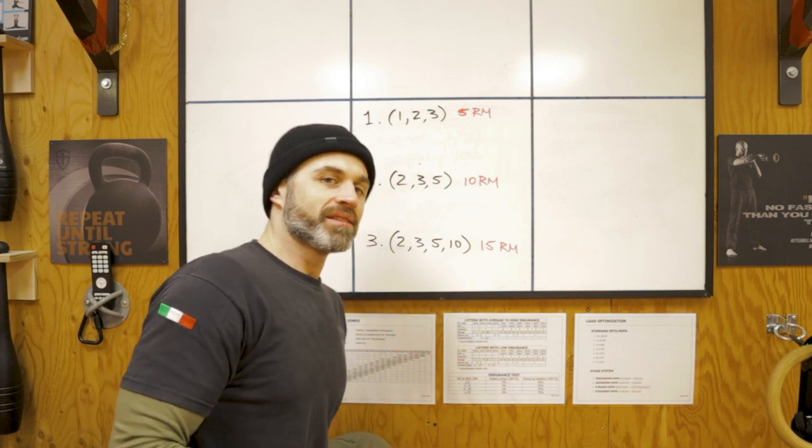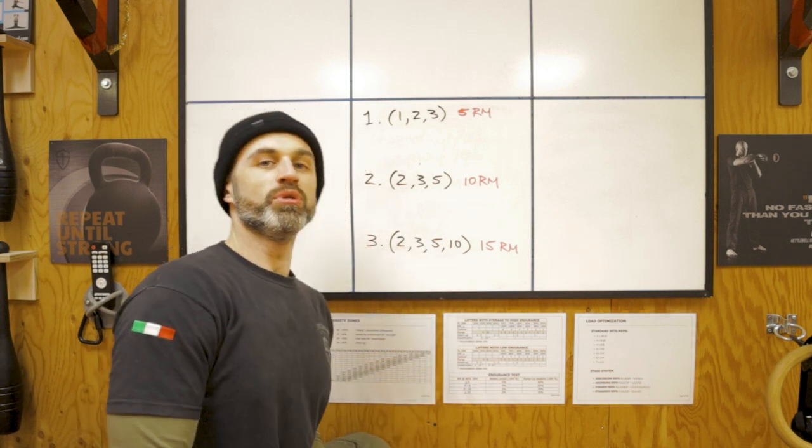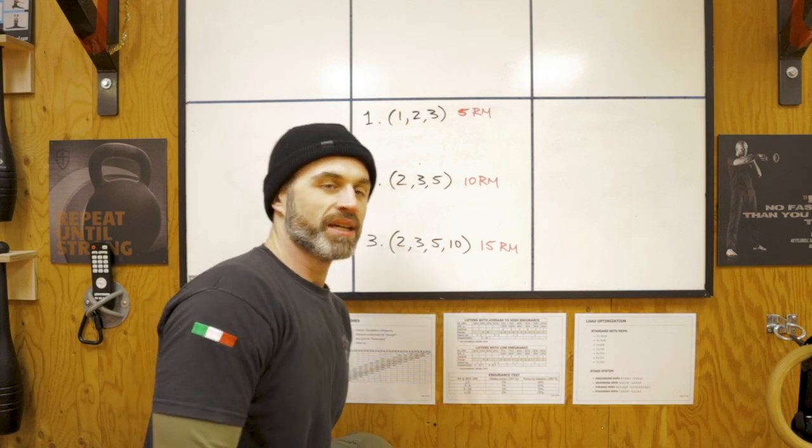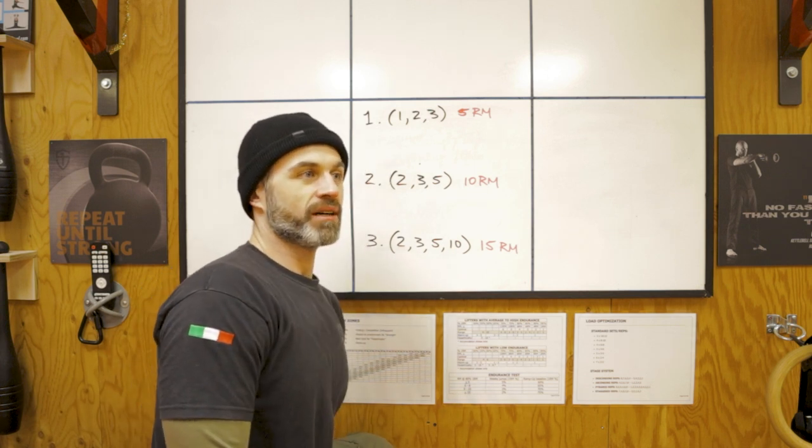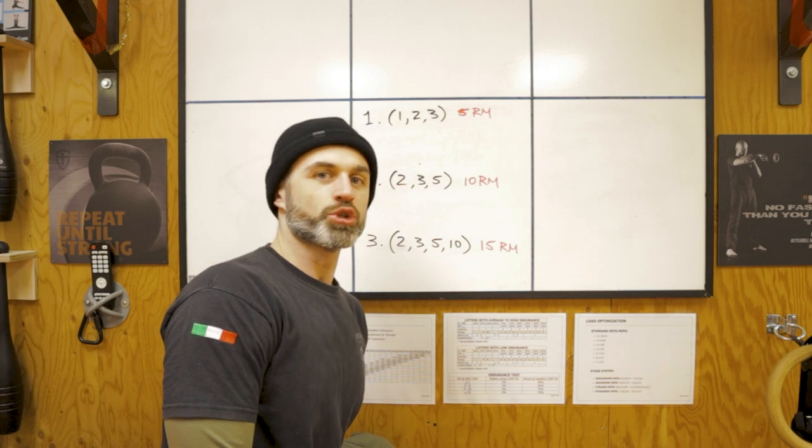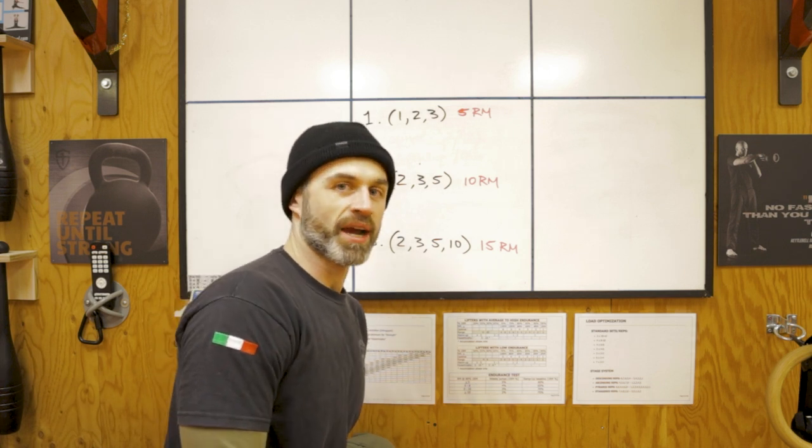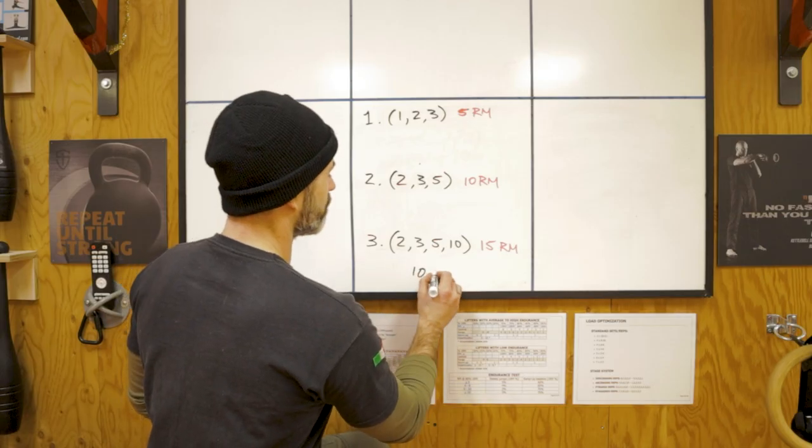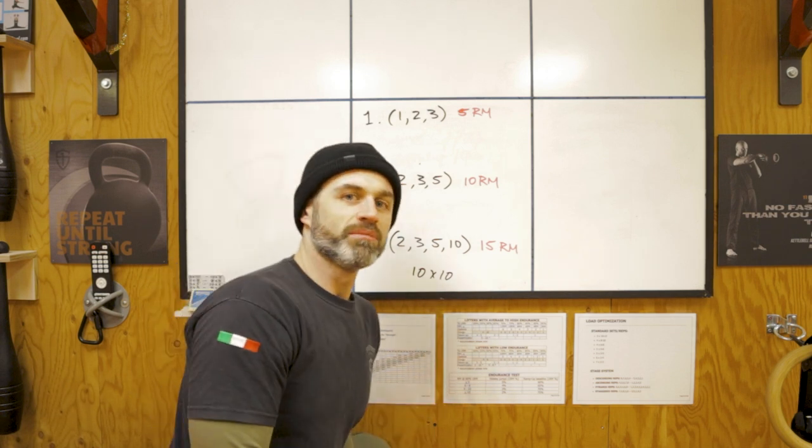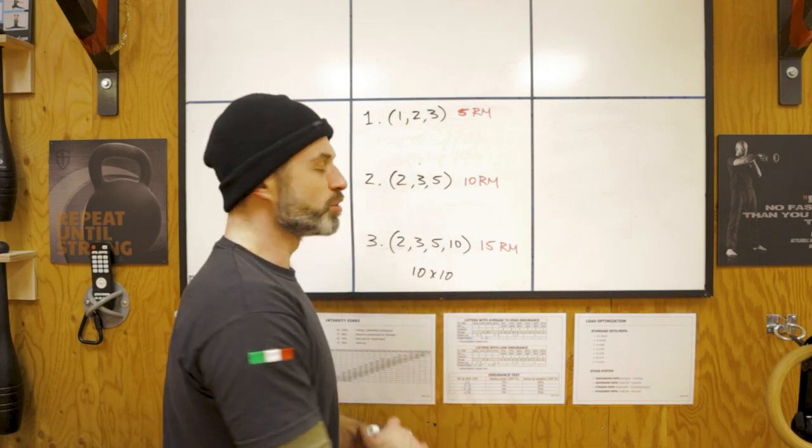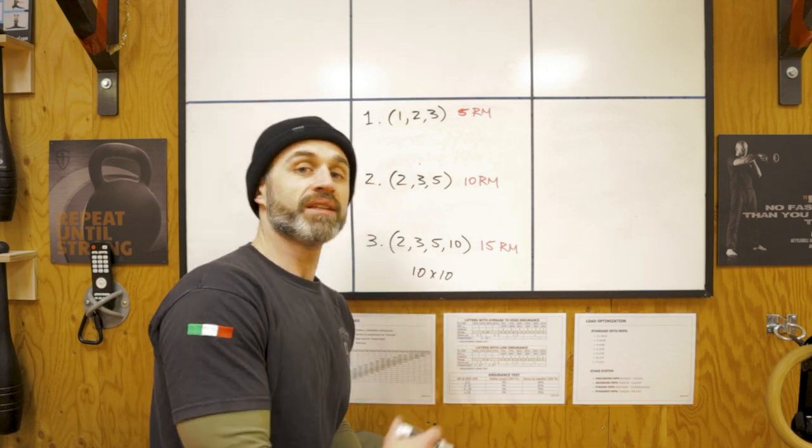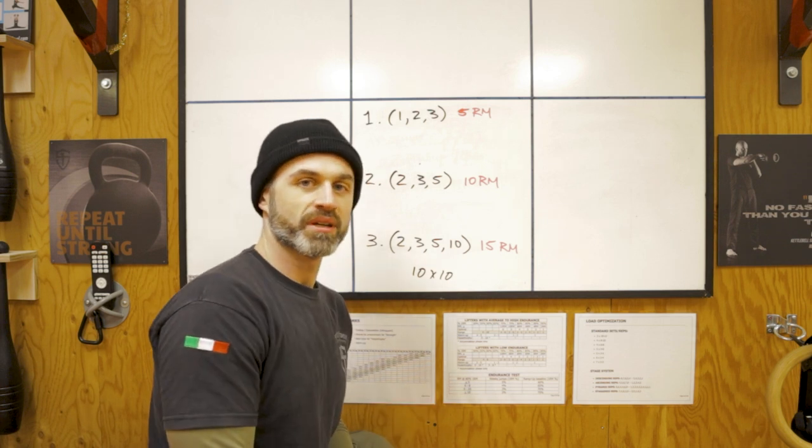The objective with the light is to work up to a total of a hundred reps. If we look at the effective program, the German volume training popularized by the late strength coach Charles Poliquin, ten by ten is a very effective muscle building protocol. We're gonna use it with the ladders, but we're gonna break it down and work up to a hundred reps over weeks.